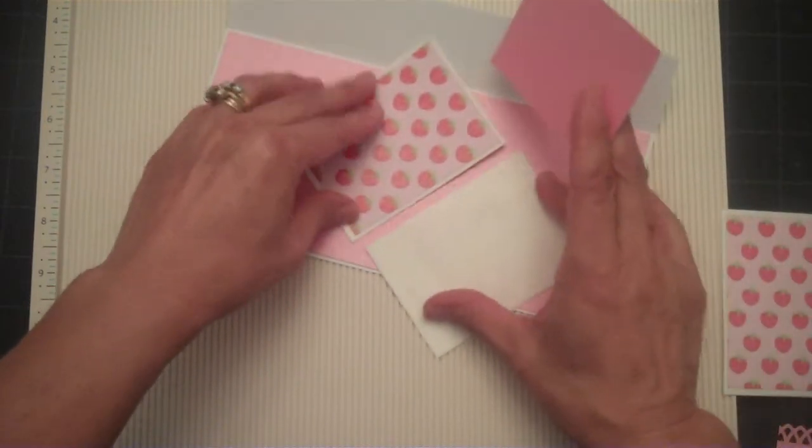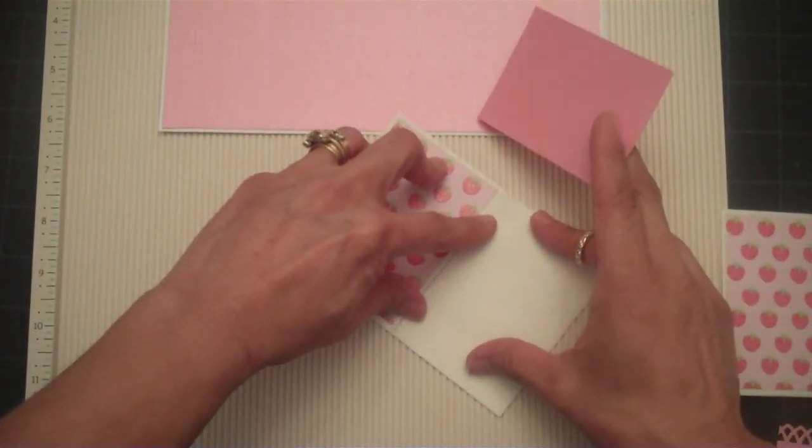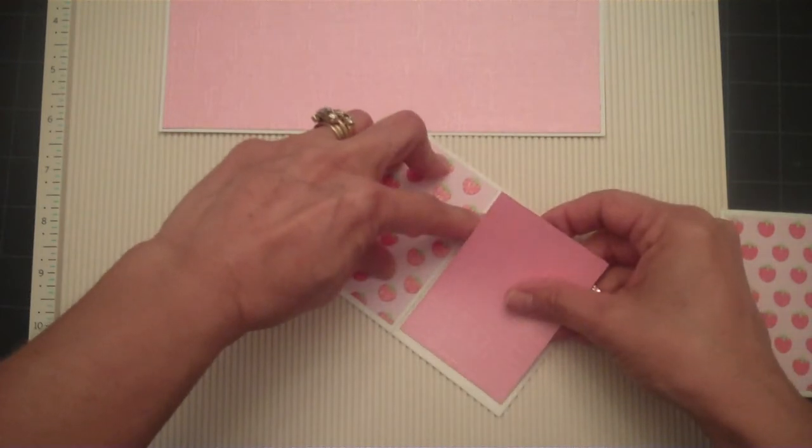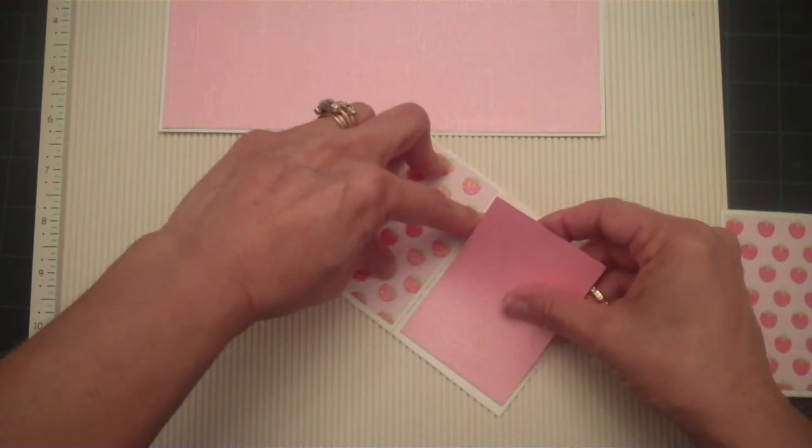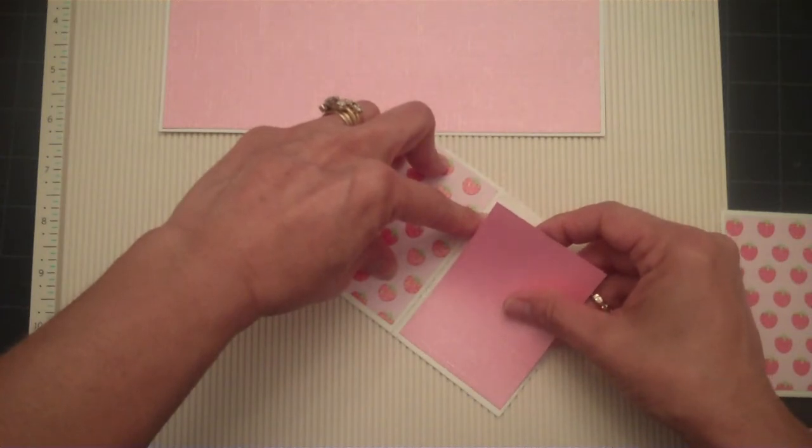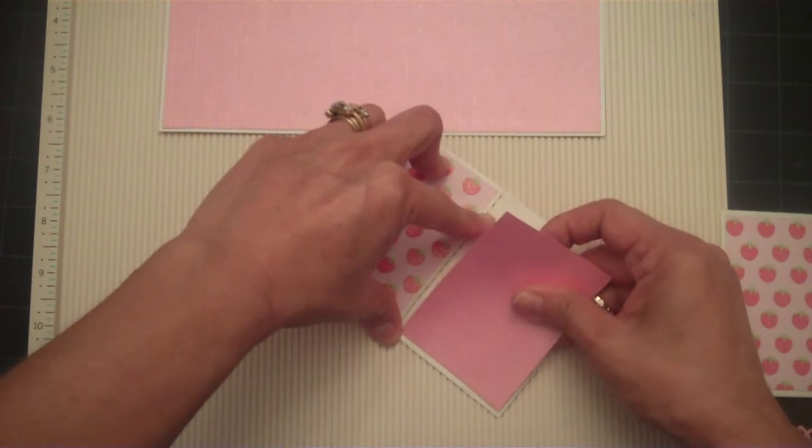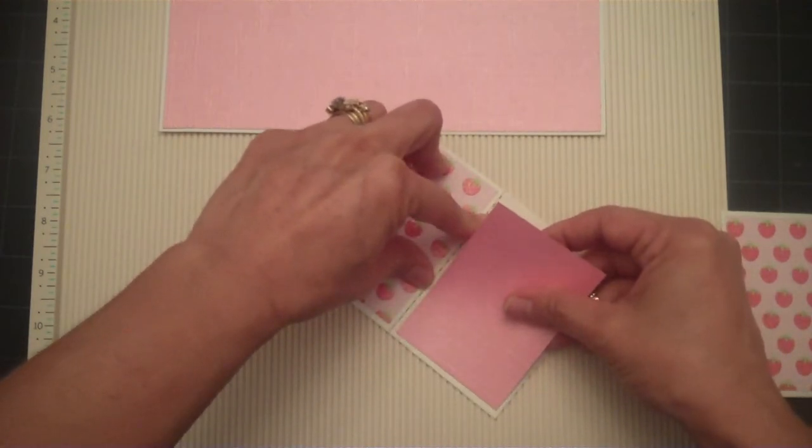I'm just going to... I want all the bottom of my mat to all be even. So I'm just going to measure it using one of the ones that I've already added the mat to. Make sure they're all even. Move it over just a little bit.